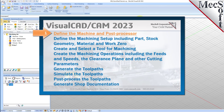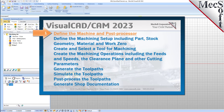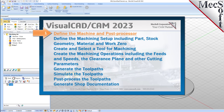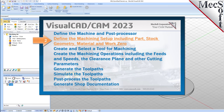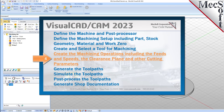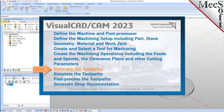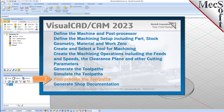We will perform the following basic steps in machining this model. First, we will define the machine and the post processor to use. Then, we will define the machine setup, including the stock geometry, material, and work zero. Then, we will create and select a tool to use for machining. We will create the machining operations, including the feeds, speeds, the clearance planes, and other cutting parameters. Then, we will generate the toolpaths, simulate the toolpaths, post-process the toolpaths, and then generate shop documentation.